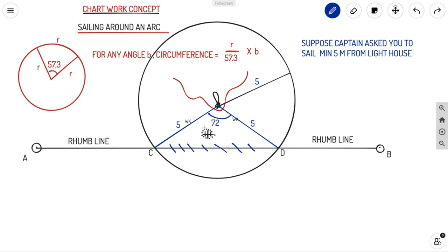Let's say it is 72 degrees. What we need to do is find what is C to D. We have the concept of circumference: for any angle b, the circumference will be r divided by 57.3 into that angle. Now you have the radius here five and the angle 72. So circumference for 72 degrees will be r divided by 57.3 into 72. Here r is five, so the answer will be 6.28 nautical miles.